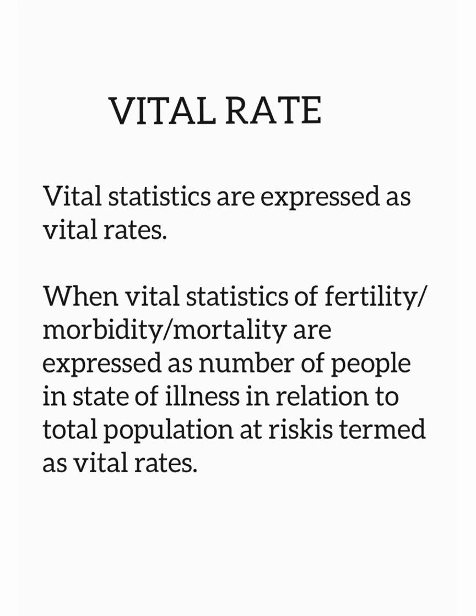Now we will talk about vital rate. When vital statistics of fertility, morbidity, and mortality are expressed as the number of people in a state of illness in relation to the total population at risk, it is termed as vital rates. Basically, when we have vital statistics — fertility means birth, morbidity means disease rate, mortality means death — we compare them in relation to the total population at risk. When we see it in relation, we call it vital rate.